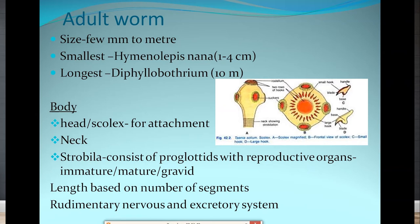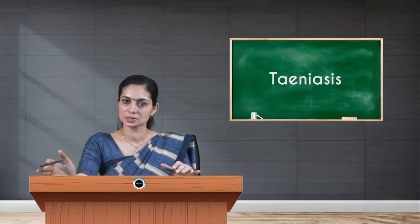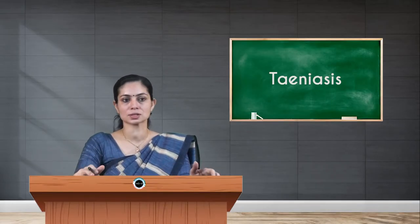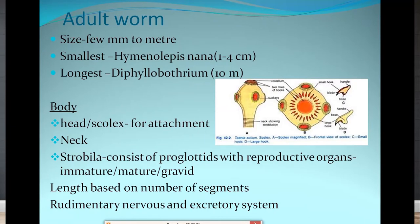The proglottids have reproductive organs. There are three types of segments found in Taenia species: immature proglottids, mature proglottids, and the gravid segment. The length of the parasite is usually based on the number of segments — how many proglottids are present. You can also find a rudimentary nervous and excretory system in these parasites.